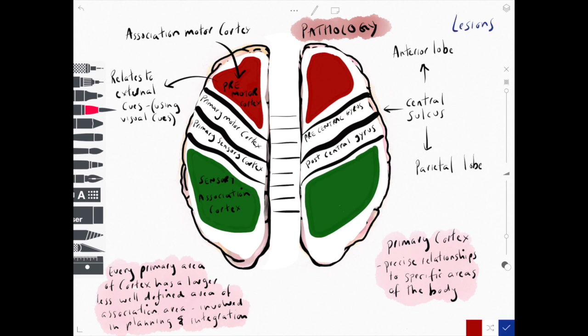In terms of damage to the primary motor cortex we would get hemiplegia or hemiparesis, that's paralysis or weakness to one side of the body.